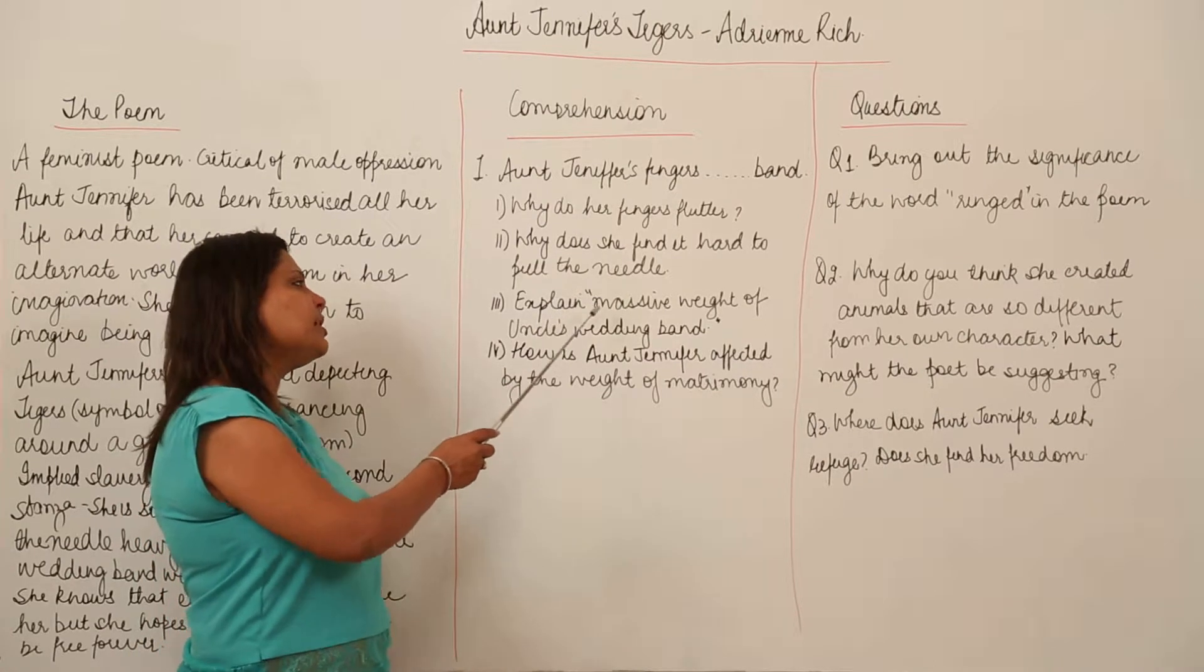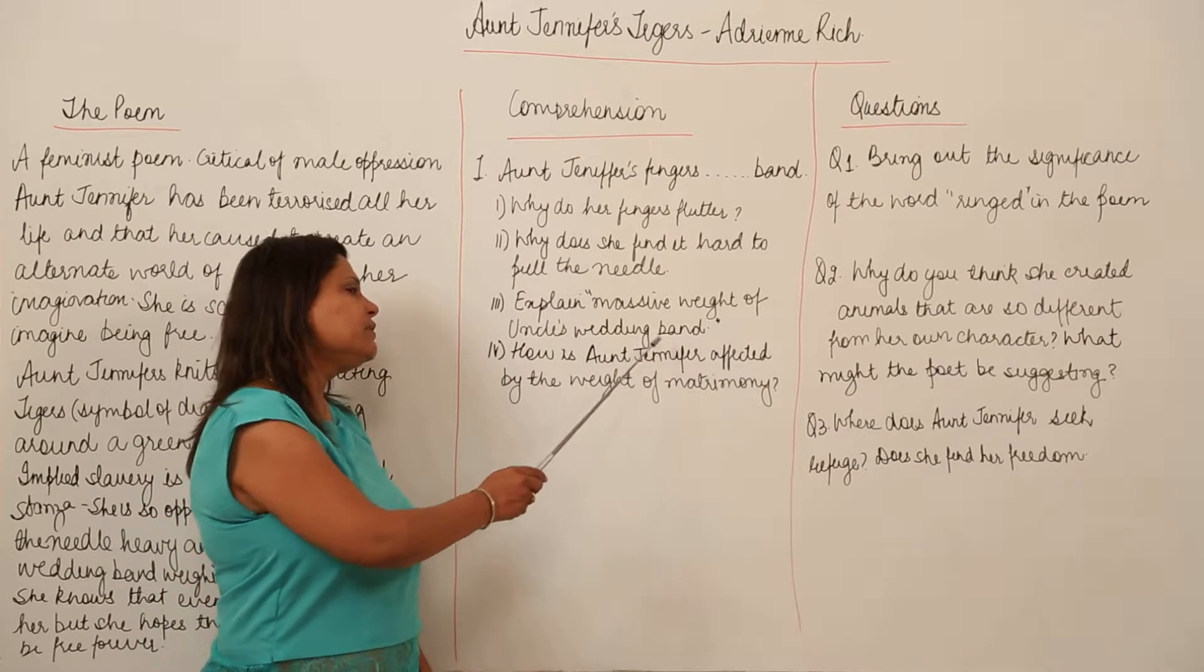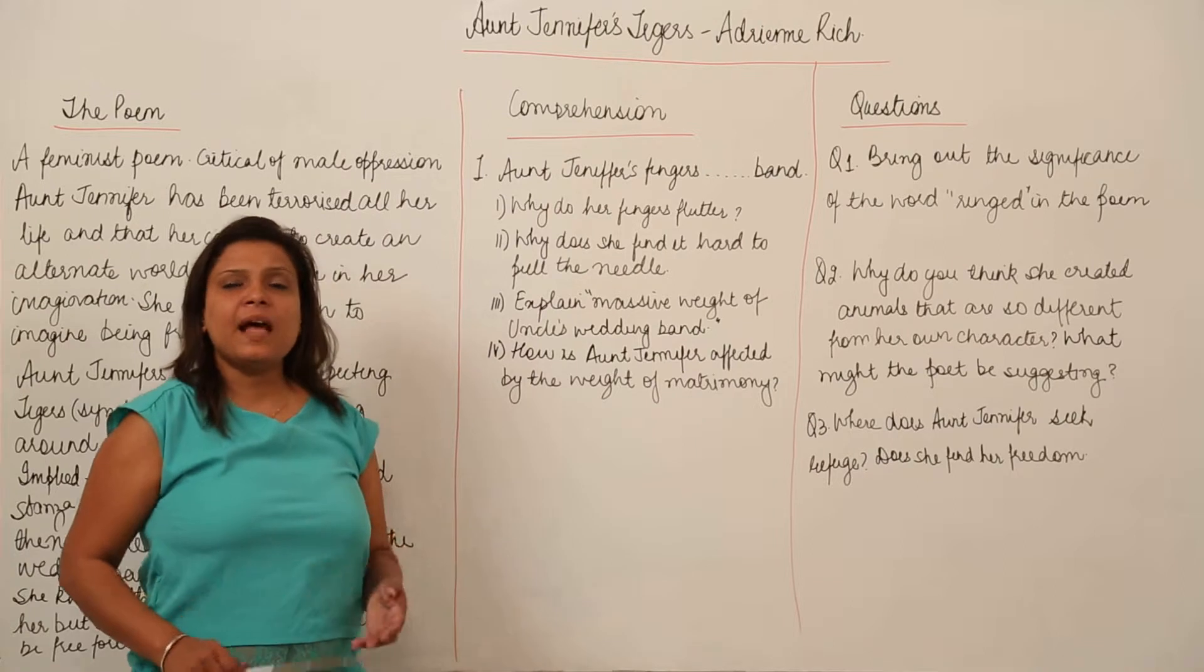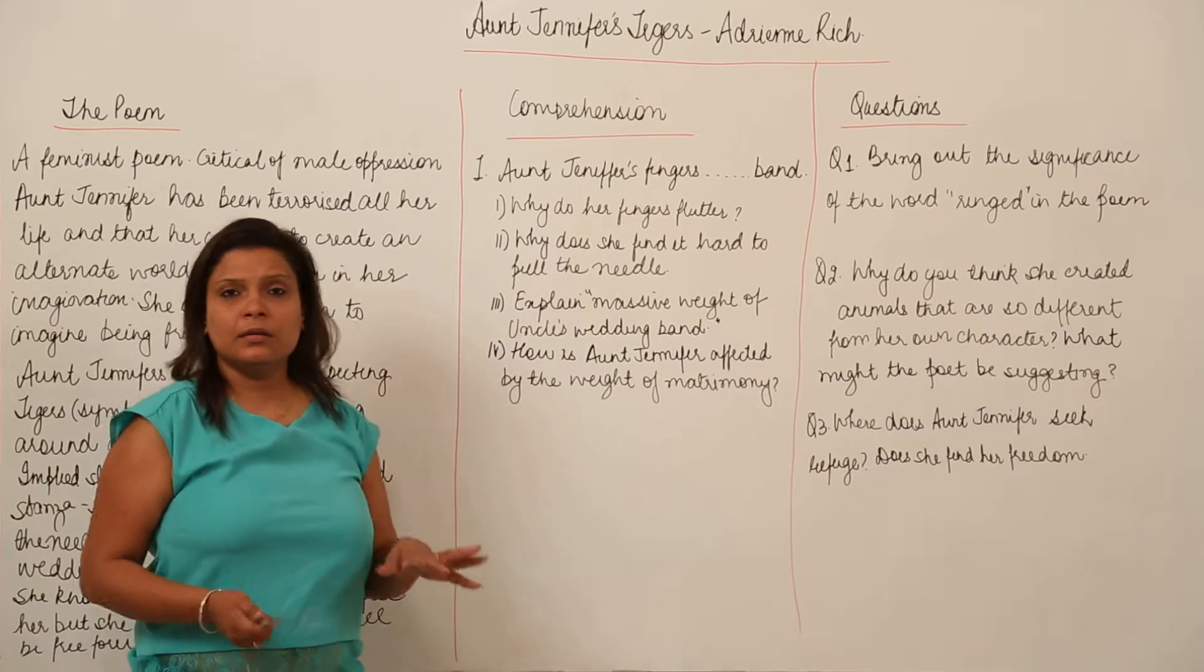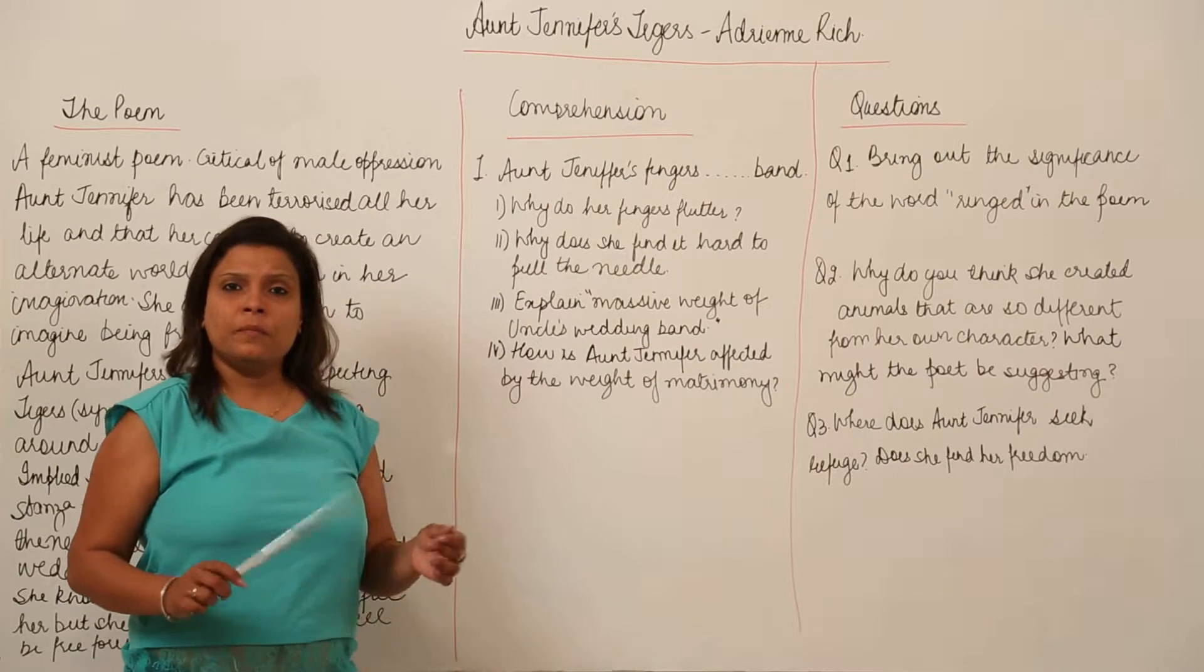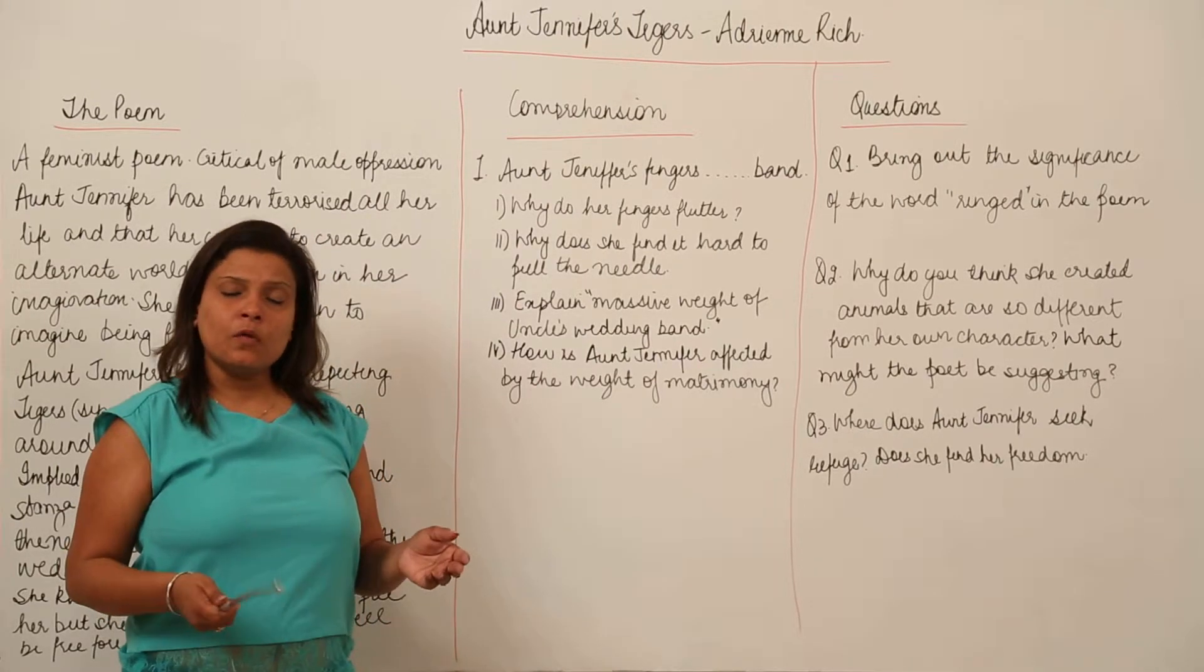Now there is a line explanation, massive weight of uncle's wedding band. The wedding band is the wedding ring that her husband, uncle, as in aunt, must have got at the time of their wedding.